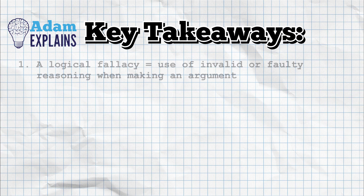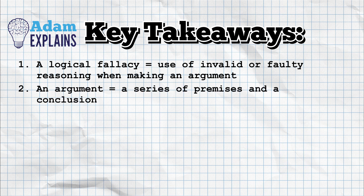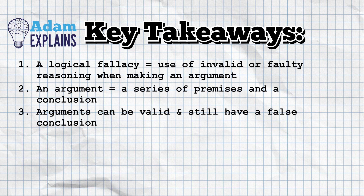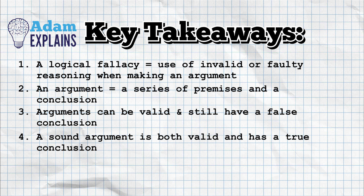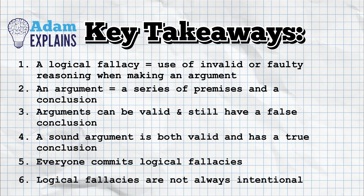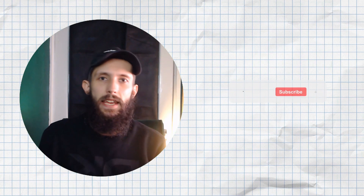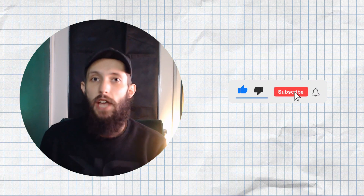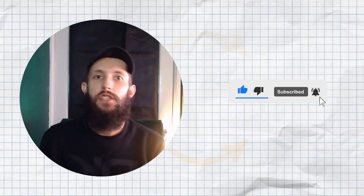The key takeaways from today's video are: a fallacy in logic is the use of invalid or faulty reasoning when making an argument; an argument is a series of premises and a conclusion; an argument can be valid and still have a false conclusion, but a sound argument is both valid and has a true conclusion; everyone commits logical fallacies from time to time, and they are not always intentional but they do often mislead or confuse people. If you enjoyed today's video please consider liking and subscribing, drop a comment below to share your thoughts, and check out some other videos. Thanks very much for watching and I'll see you next time.